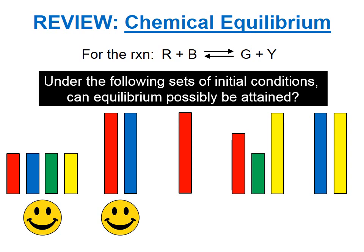Suppose we start with just the reactant red. Can we reach equilibrium? And the answer is no, because remember that at equilibrium, we need some green and some yellow, and we can't make any green or yellow without any blue to go along with the red that we already have.